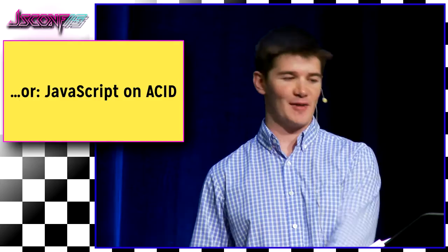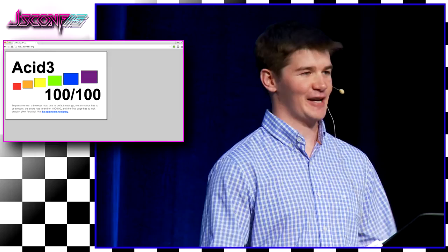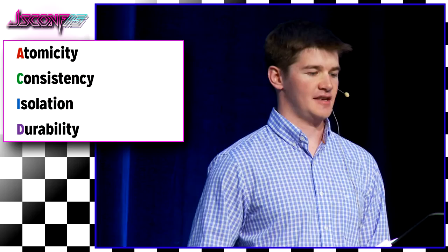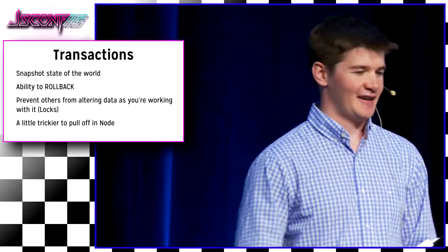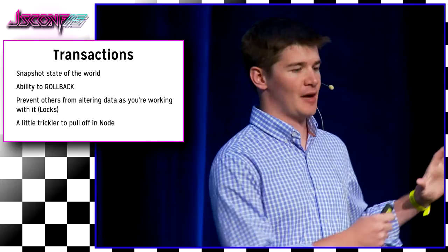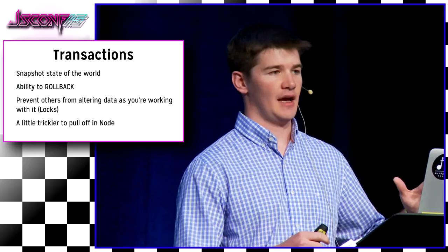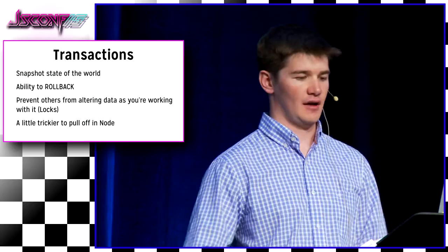So the subtitle of the talk — or JavaScript on Acid. This is not the Acid test. What I mean is Atomicity, Consistency, Isolation, and Durability. These are the principles — I'm not going to go into each because that could be a separate talk. But transactions sort of sum that up. What they do is give you the ability to have a snapshot state of the world as you're working with your database, allowing you to roll back to a certain point in time and prevent other connections from altering rows as you're working within a single atomic unit of state.